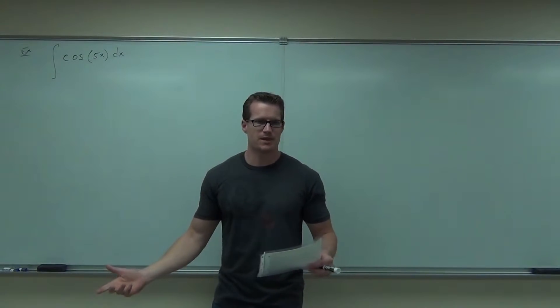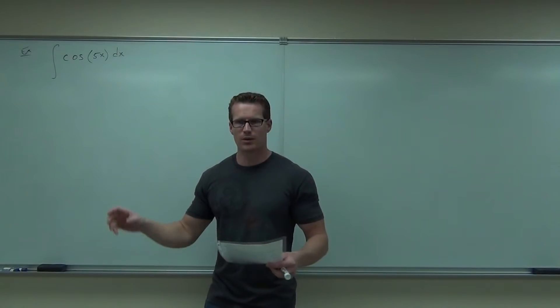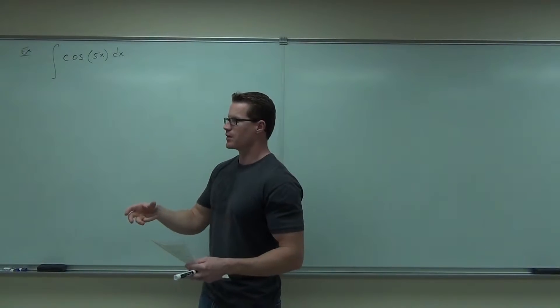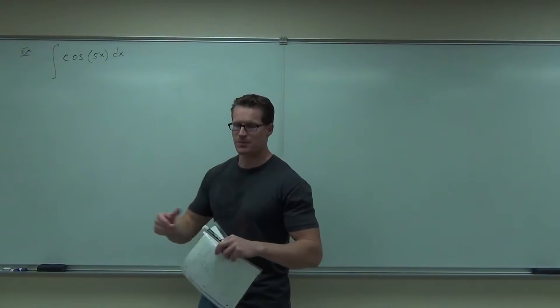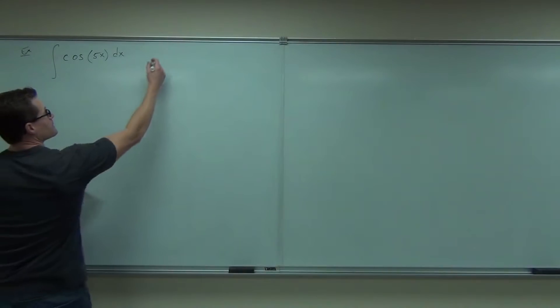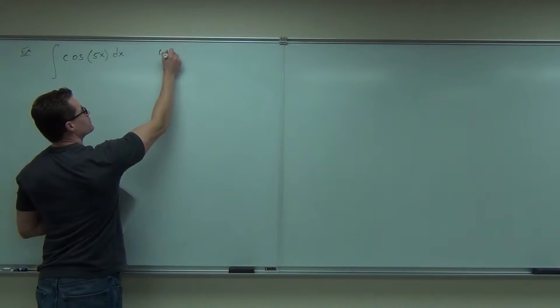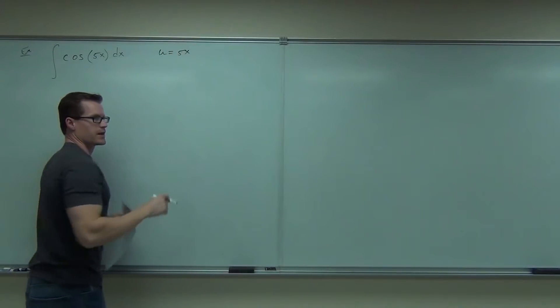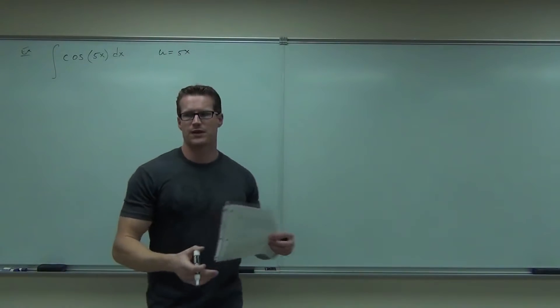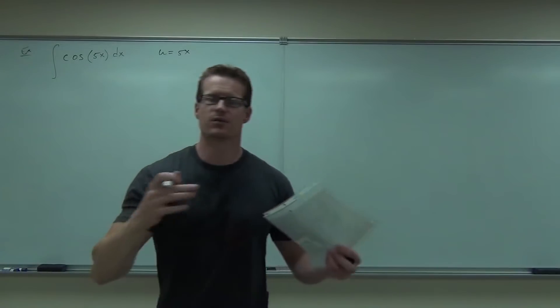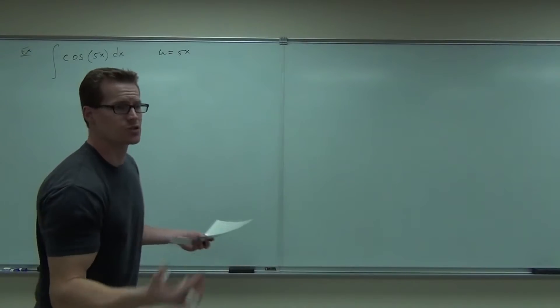Now, we don't care about the 5 being up there because that's a constant. We'll be able to pull that out as one-fifth. So basically, just our x's have to match up. Our idea was let's make a u-substitution so that our integral will ultimately fit into our integration table. If it fits, then we can do it.